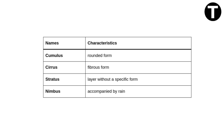We have four main names that define cloud types: Cumulus, meaning rounded form; Cirrus, meaning fibrous form; Stratus, meaning layer without specific form; and Nimbus, meaning accompanied by rain.